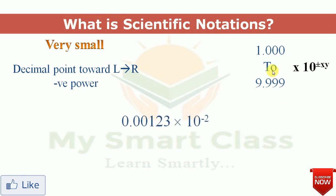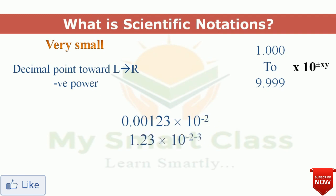Another example: a number smaller than 1 with 10 raised to minus 2. To convert to scientific notation, we shift the decimal point one time, two times, three times — three places to the right. That negative 3 adds to the existing exponent of minus 2, giving a final answer of 1.23 × 10⁻⁵.